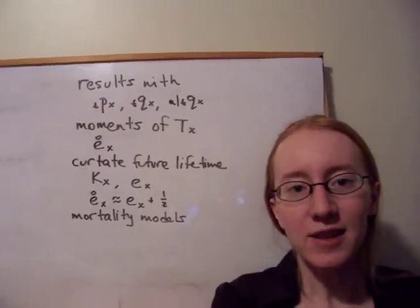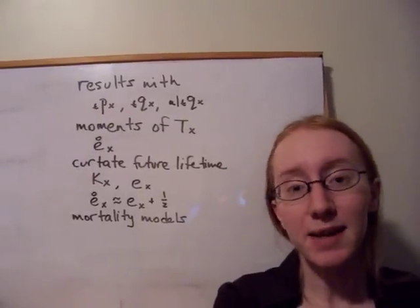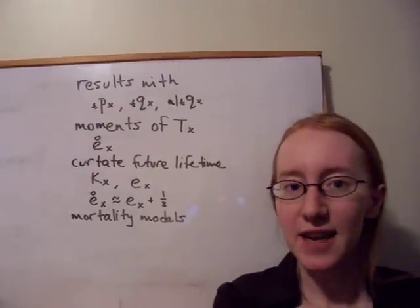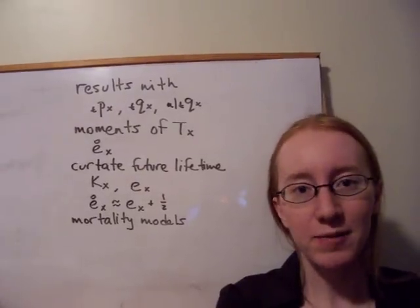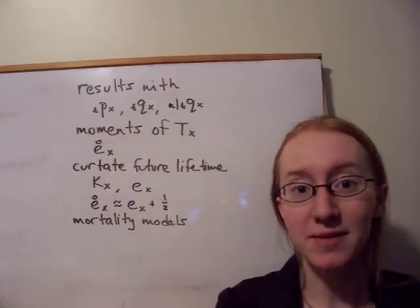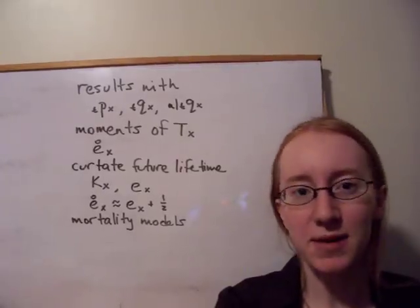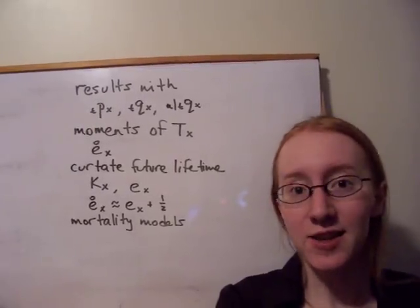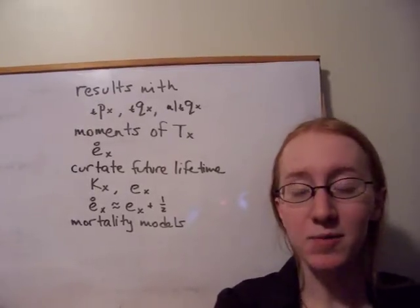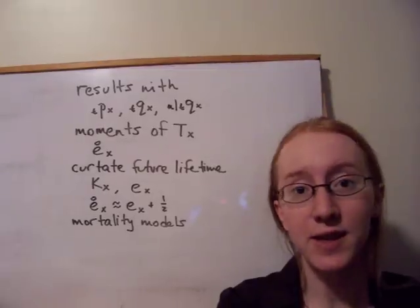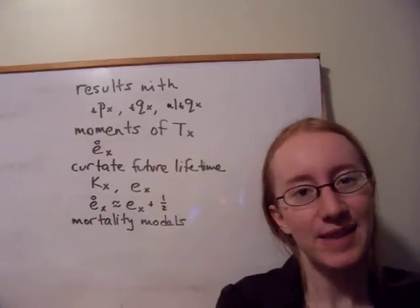That's known as the complete expectation of life for a life age X. It turns out that if we start by using first principles of expectation and integrate by parts, we end up with a nice simple formula for E circle X. It's just the integral from 0 to infinity of the survival function TpX dT. That's a pretty nice result.